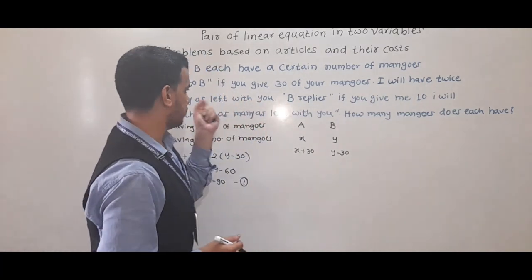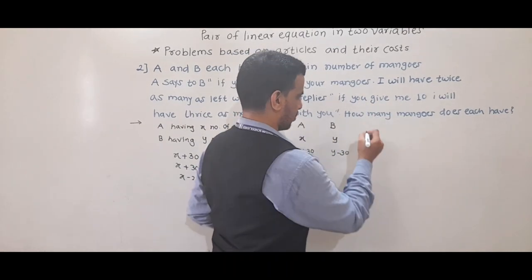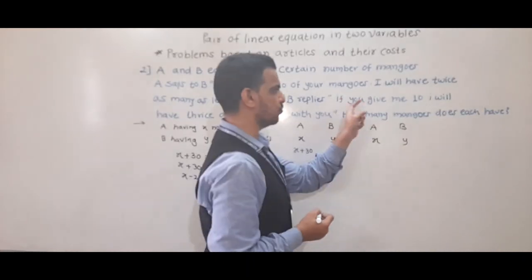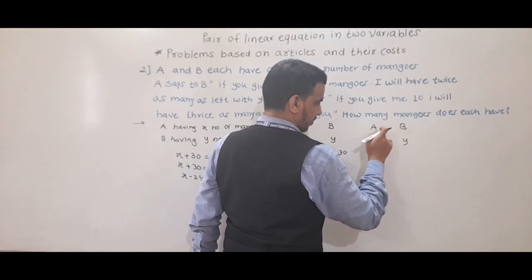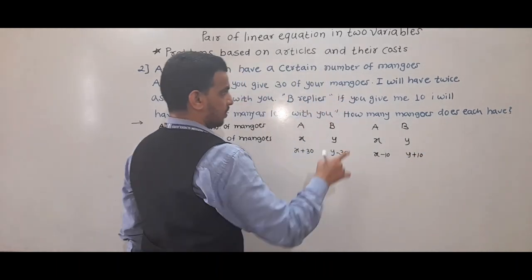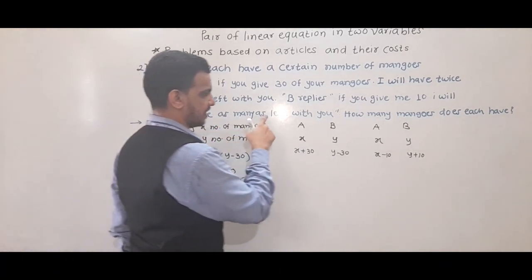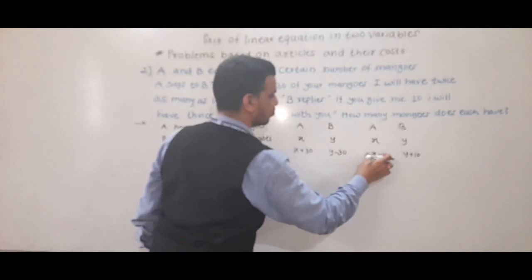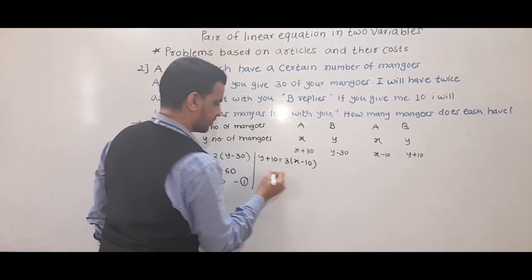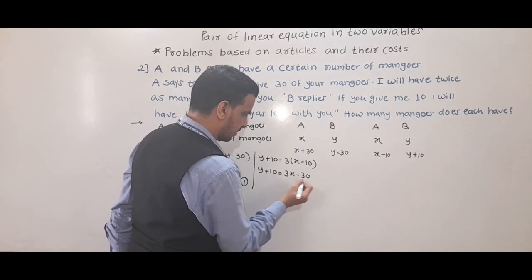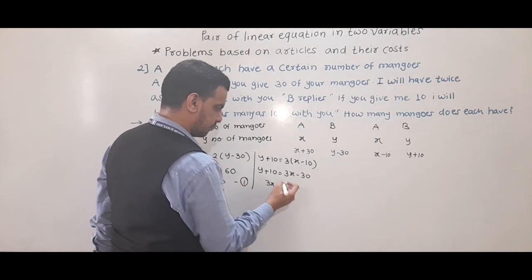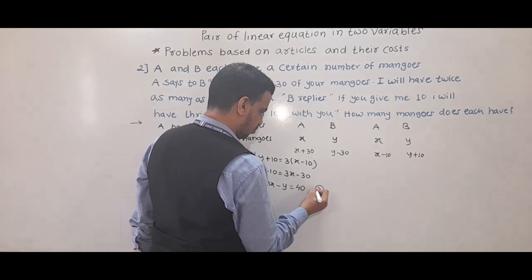For the second equation: B replies, if you give me 10. If A gives 10 mangoes to B, A has x minus 10 and B has y plus 10. The condition is that B will have thrice as many as left with A, so y plus 10 equals 3 into x minus 10. Simplifying: y plus 10 equals 3x minus 30, so 3x minus y equals 40. This is equation 2.